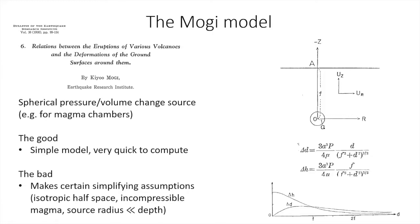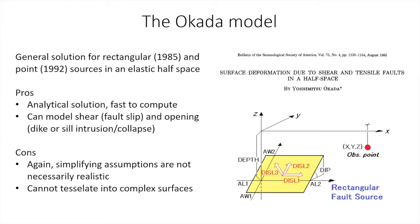The counterpart to the Mogi model for faults and dikes is the Okada model — more formally the rectangular elastic dislocation model. Many people tried to solve the elastic dislocation problem analytically and made errors or found it intractable, but Okada was the first to nail it down without errors. He also supplied a Fortran subroutine for the calculation, so everybody adopted it. Because it is an analytical solution, it is very fast to compute — milliseconds on modern hardware.